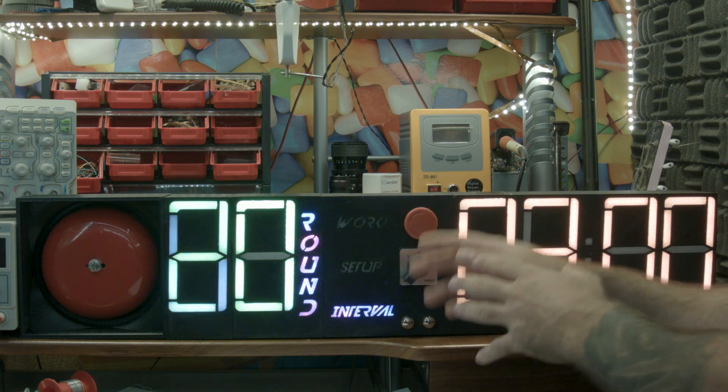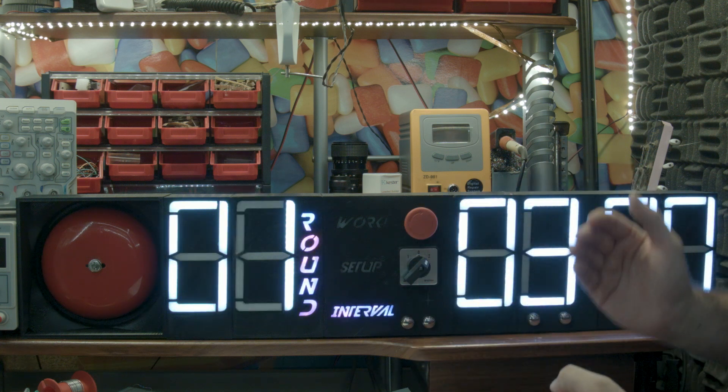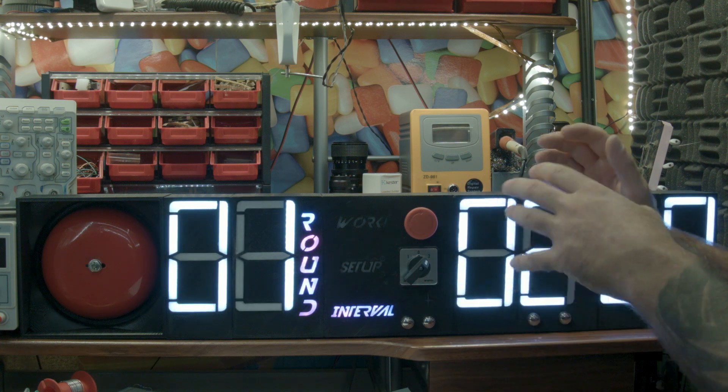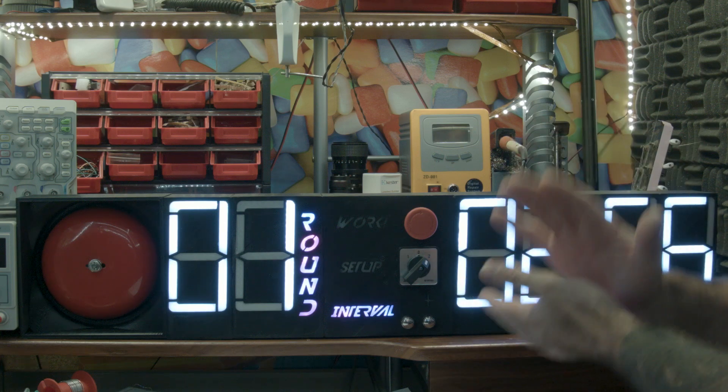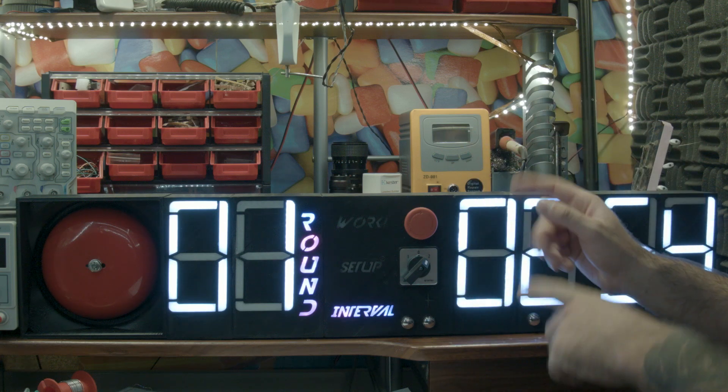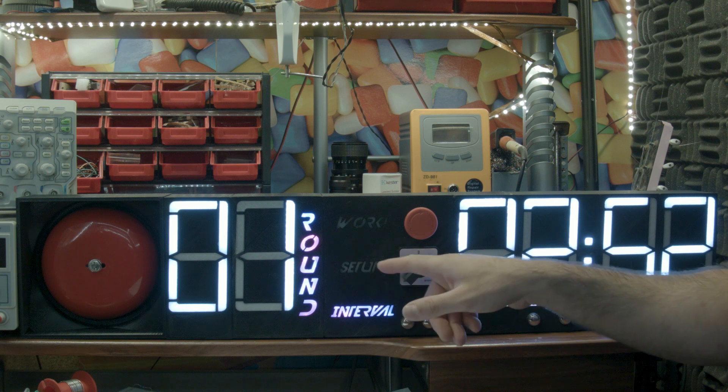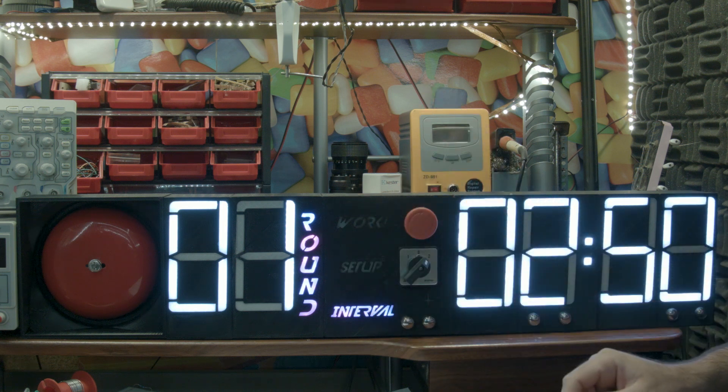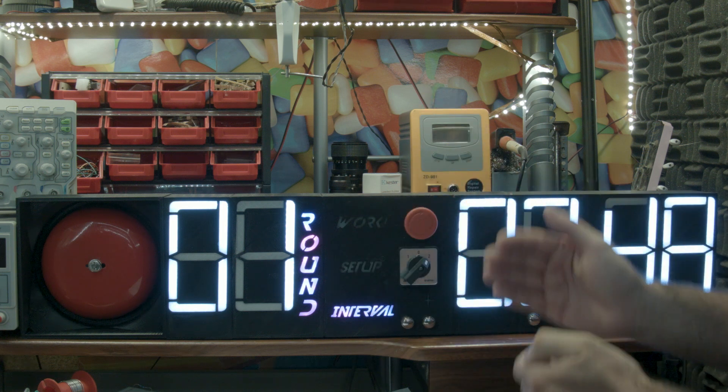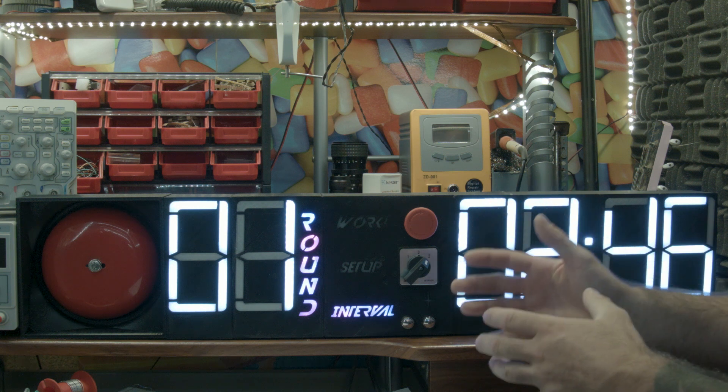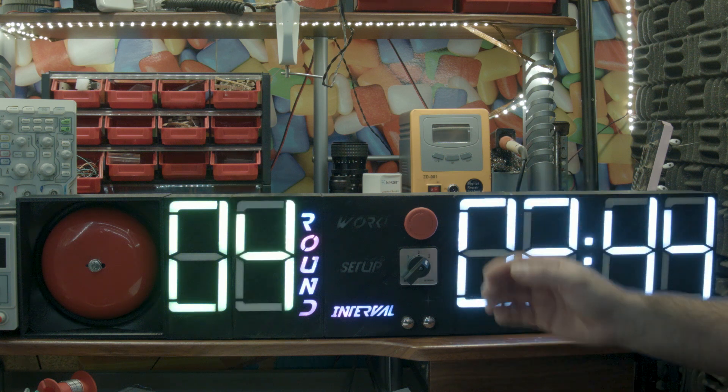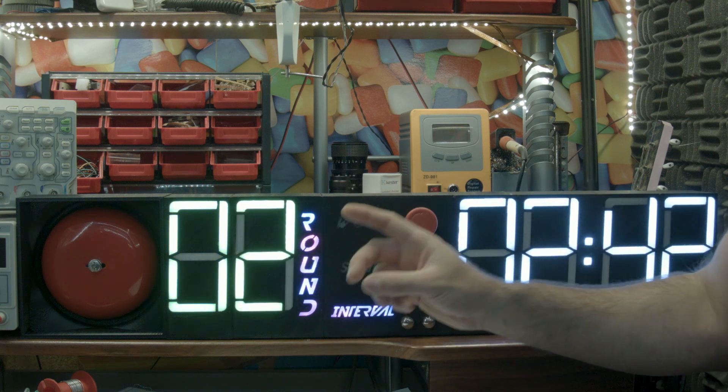And in interval mode, the same countdown type of clock still applies, but now we do not get the 10-second clapper. However, what we do get instead, since we set our interval to 20 seconds, is a signal every 20 seconds while we are in the working period. So now we get another signal.